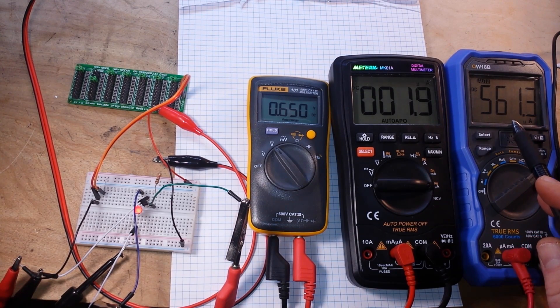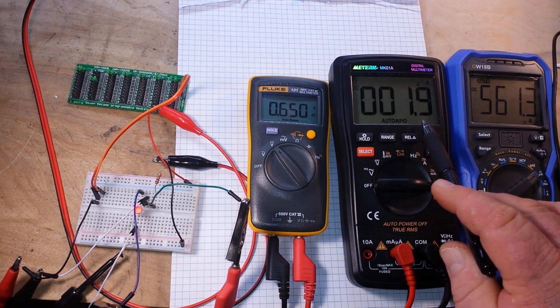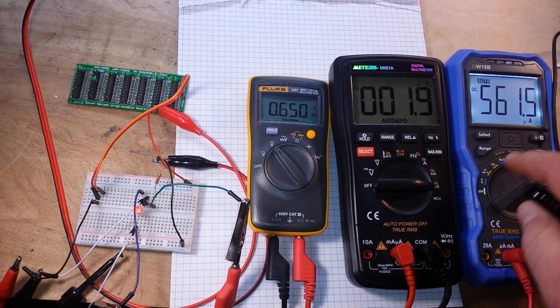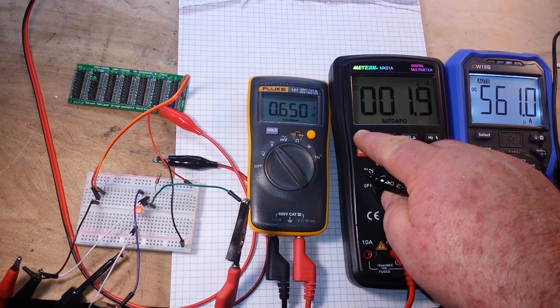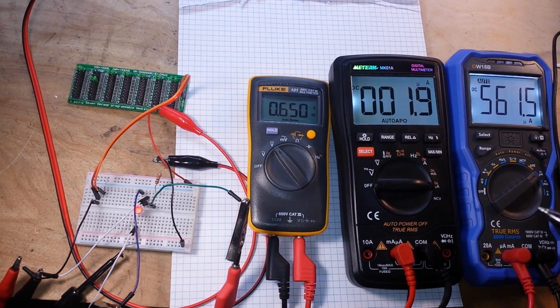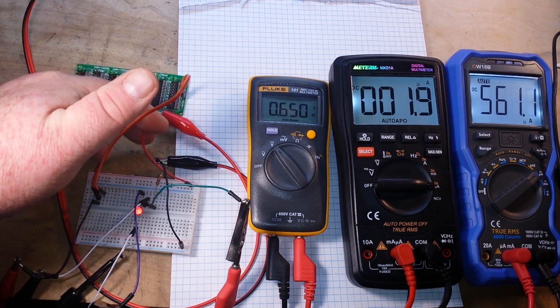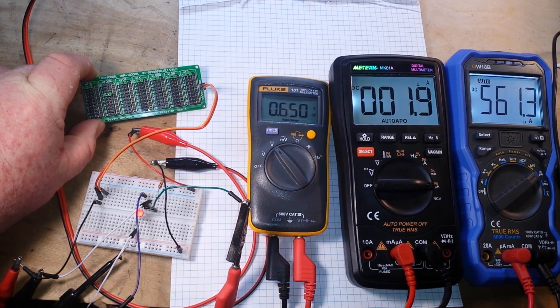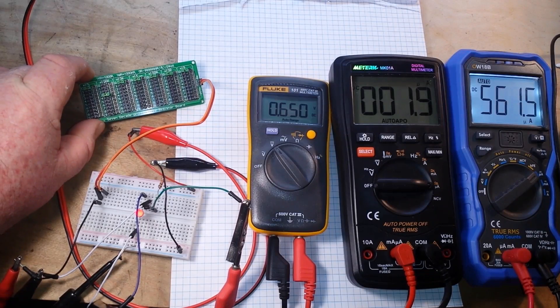So you're seeing right here the amplification of that transistor, the HFE or the beta. What we're doing here is I'm just using this little resistor substitution box and we can get some basic ideas here.